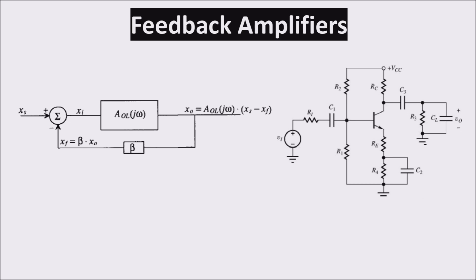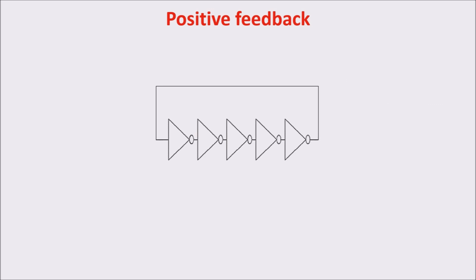Positive feedback occurs when the system output is added to the system input, whereas negative feedback occurs when the system output is subtracted from its input. Examples of positive feedback are oscillators.